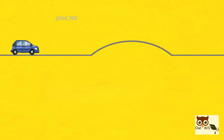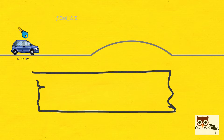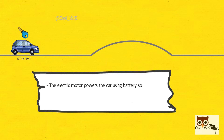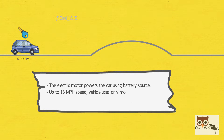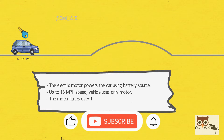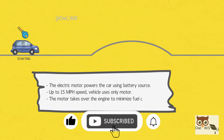Starting from rest, when starting the car, the electric motor powers the car using the battery source. Up to 15 miles per hour of speed, the vehicle uses only the motor. In this case, the motor takes over the engine to minimize fuel consumption.